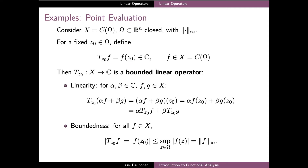The operator T_z0 is then an operator from our space x of continuous functions to the space of complex numbers. It is also linear, since if we apply it to a linear combination of two functions f and g, then the way our addition and scalar multiplication are defined on C(omega) imply that the end result is the corresponding linear combination of the values of f and g at the point z0.